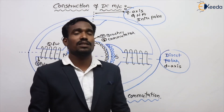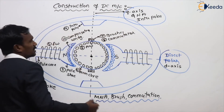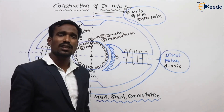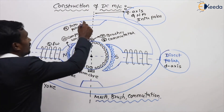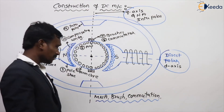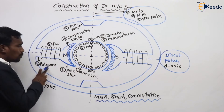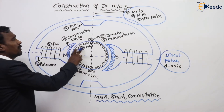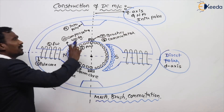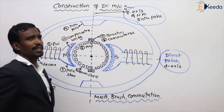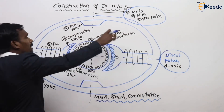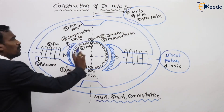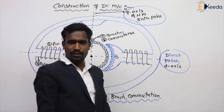MNA will shift under load. So these are the constructional points of our DC machine. We will discuss yoke, pole core, pole shoe, armature core, then field winding, armature winding, brushes, and commutator — eight points now. Interpoles and compensating winding will be covered in armature reaction.